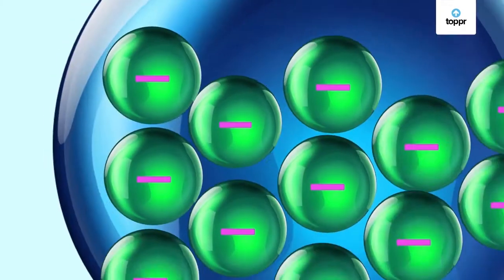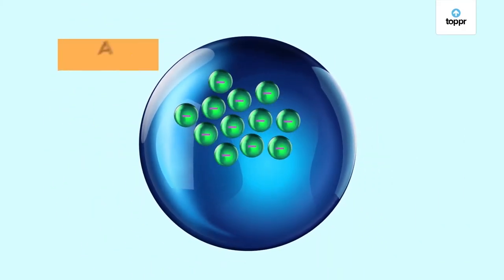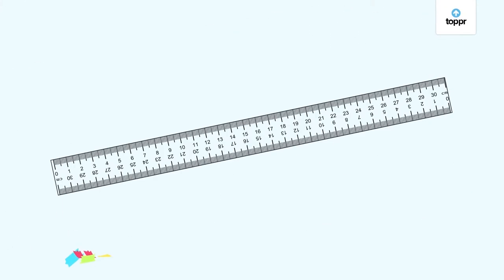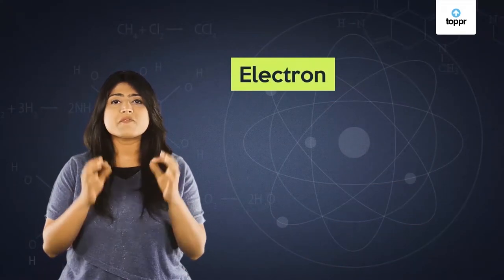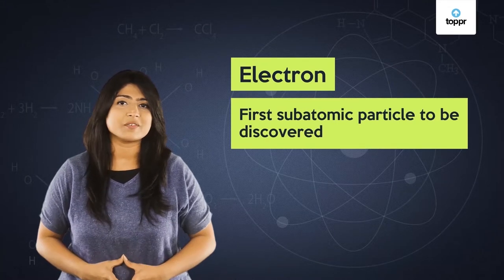Electrons were found to be very small in size compared to the atom and it is because of them that objects can become electrically charged. Electron was thus the first subatomic particle to be discovered.